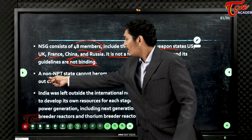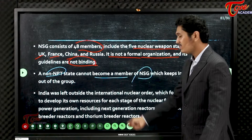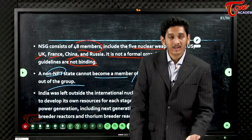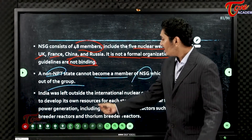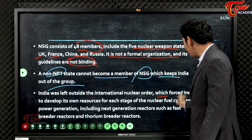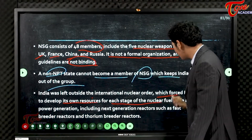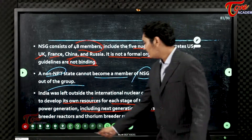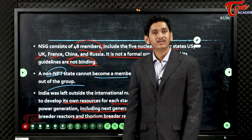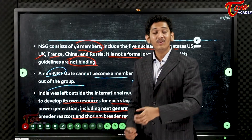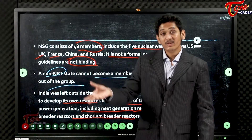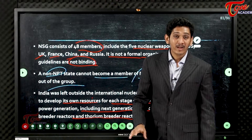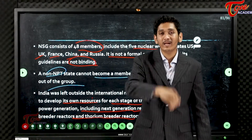A non-proliferation non-signatory state cannot become a member of NSG, which keeps India out of the group. India was left outside the international nuclear order, which forced India to develop its own resources for each stage of the nuclear fuel cycle and power generation, including next-generation reactors such as fast breeder reactors and thorium breeder reactors.